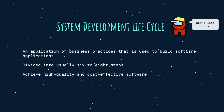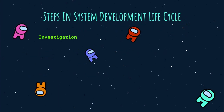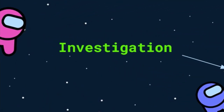The System Development Life Cycle, or SDLC, is the application of business practices used to build software applications. This method consists of six to eight steps. Starting with investigation, this is the initial stage where problems in the system are identified, made easy to understand and solve, helping improve the system to become more efficient in its development.